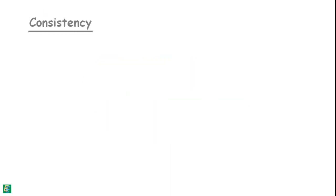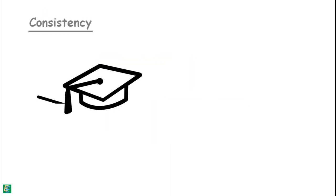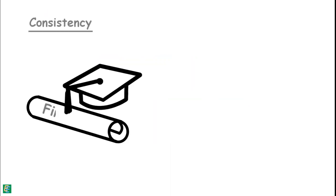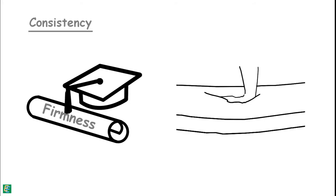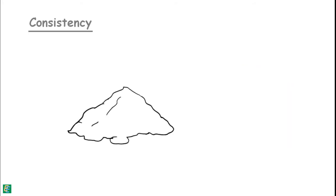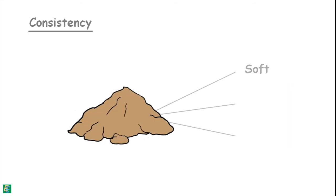Consistency is a term used to describe the degree of firmness of soil. It is indicated by terms such as soft, medium, and hard.